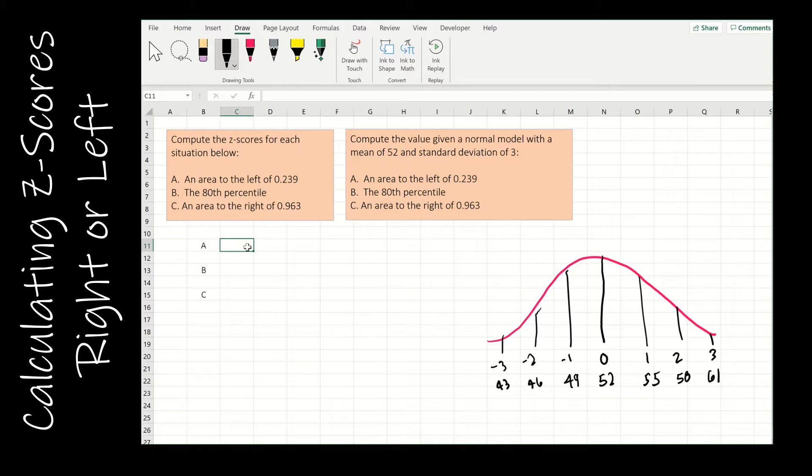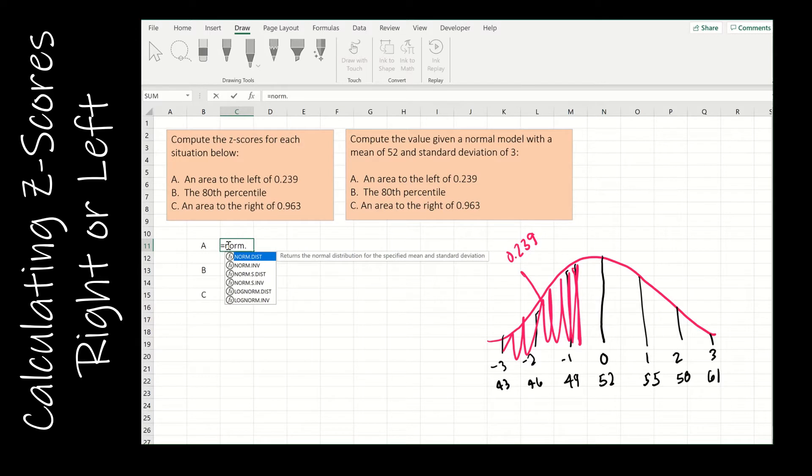For A, it says, let's find a z-score if the area to the left of the value is 0.239. So we've got some value where, if I shaded all of this in, this area is 0.239. So we could use a normal table, but it's just way more complicated. So let's just use NORM.S.INV and then put 0.239. What does the S mean? S means standard, so that means it's going to return a z-score. What does inverse mean? It means I'm giving you the area, you give me the z-score. And so the z-score is negative 0.7095.